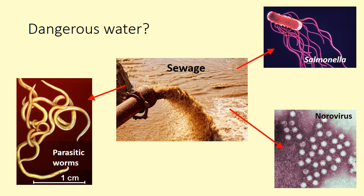Is water dangerous? Water doesn't have to look like a sewage plant to be dangerous — we can have lots of microbes inside there. There are parasitic worms, salmonella, and norovirus. If you think about natural disasters such as earthquakes or hurricanes, what often takes the most lives is diseases spread by unclean water after the event, rather than the event itself.